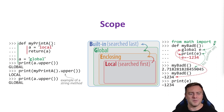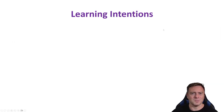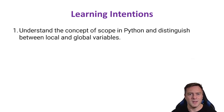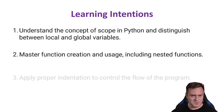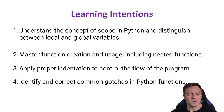I'm going to play around with a few different functions to see that — it should be a bit of fun. It really helps to understand how this works because then your programming will become that much better. So some learning intentions for today: we're going to understand the concept of scope in Python and distinguish between local and global variables, master function creation and usage including nested functions, apply proper indentation to control the flow of the program, and identify and correct some common gotchas in Python functions.